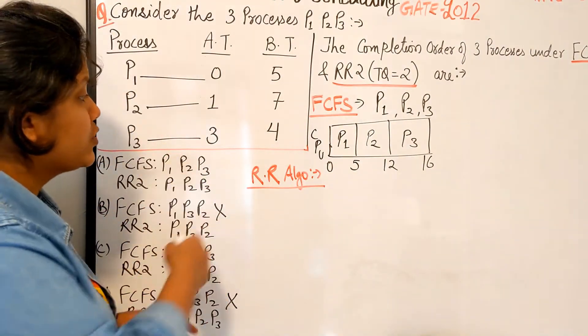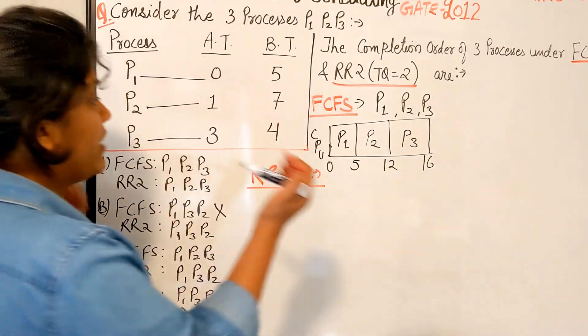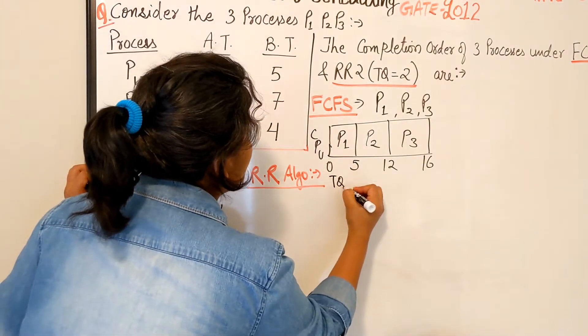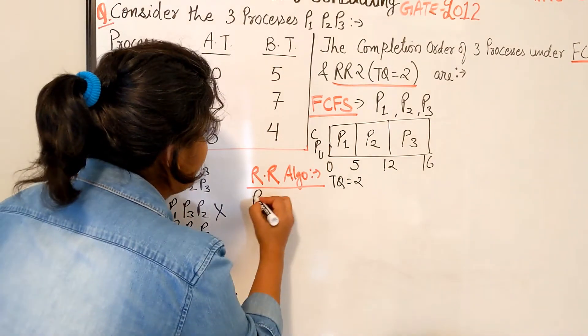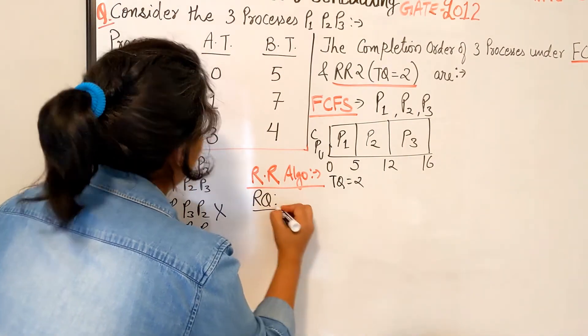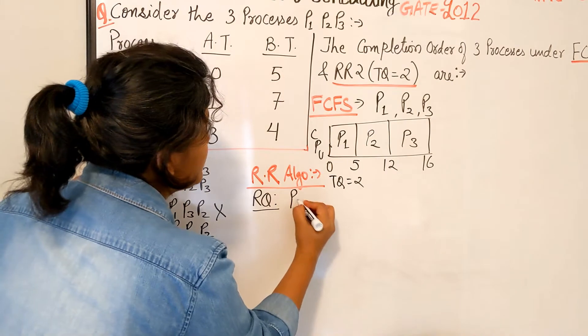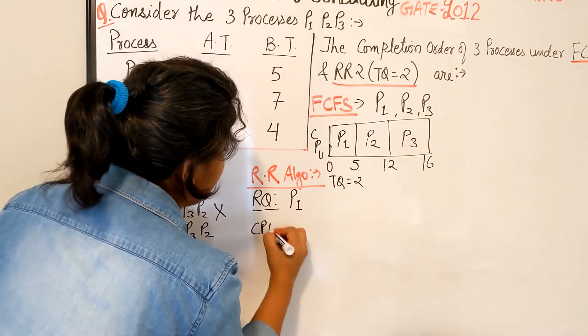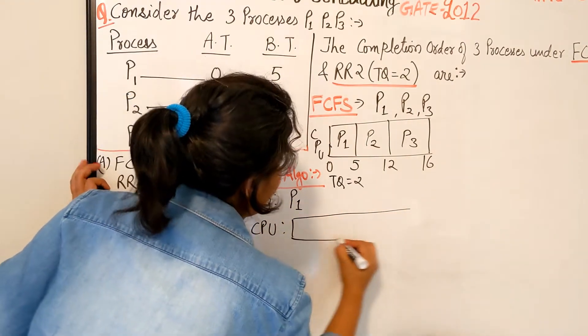Now let's quickly find out the completion time for the processes using the Round-Robin algorithm. We know the time quantum given to us is 2. Let's have the ready queue status. Initially at time 0 we have just process 1 in the ready queue, and here is my CPU on the Gantt chart so that will make it easier.